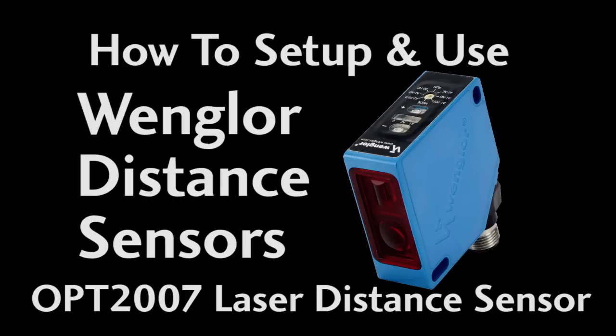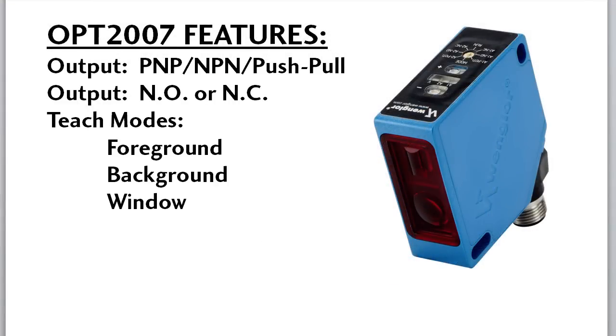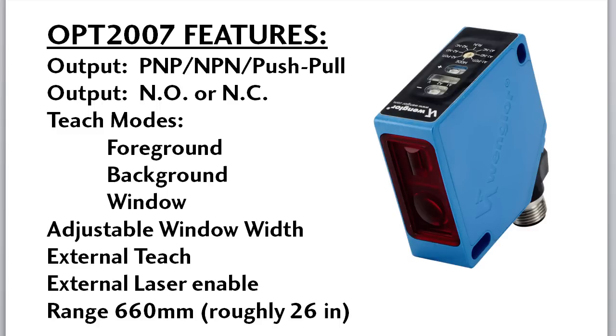The OPT2007 is a surprisingly full-featured distance sensor for the price and it's a great choice for measuring distances and detecting objects within about a 2-foot range. It's just as capable as the other more expensive sensors, so what's the catch?